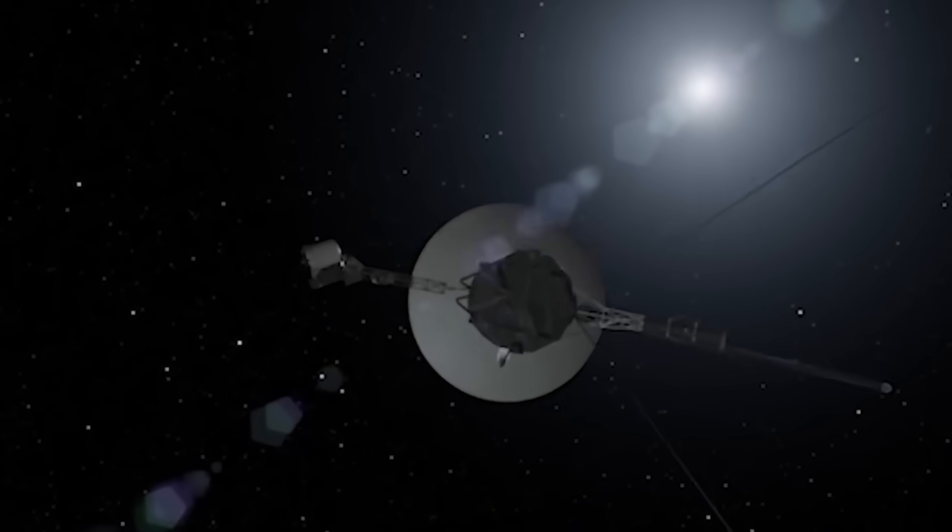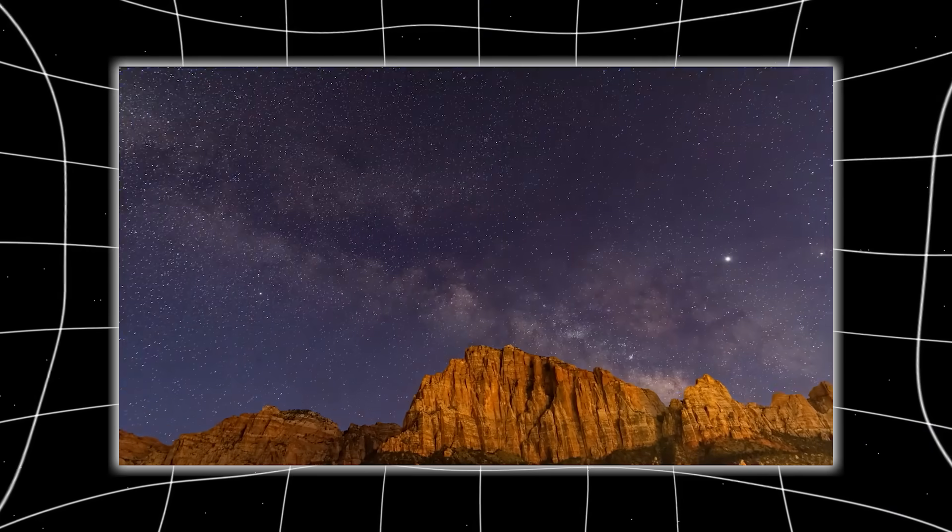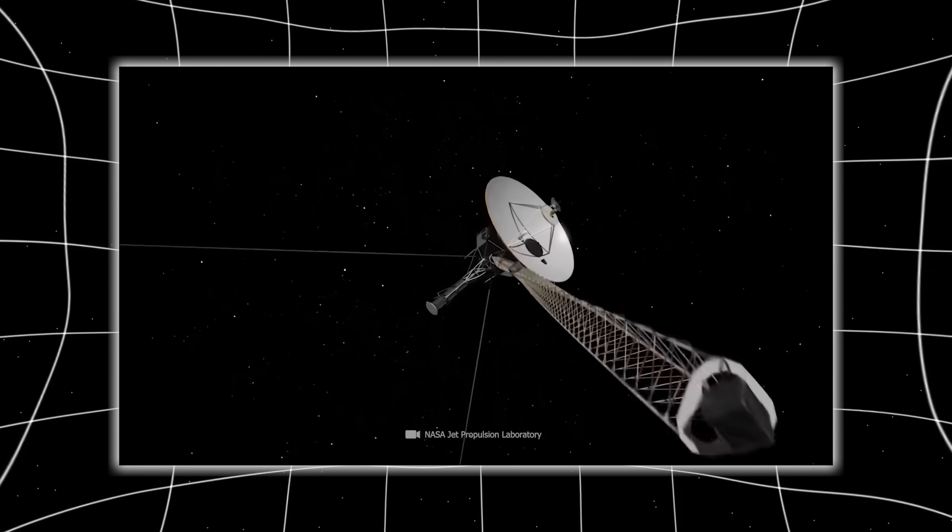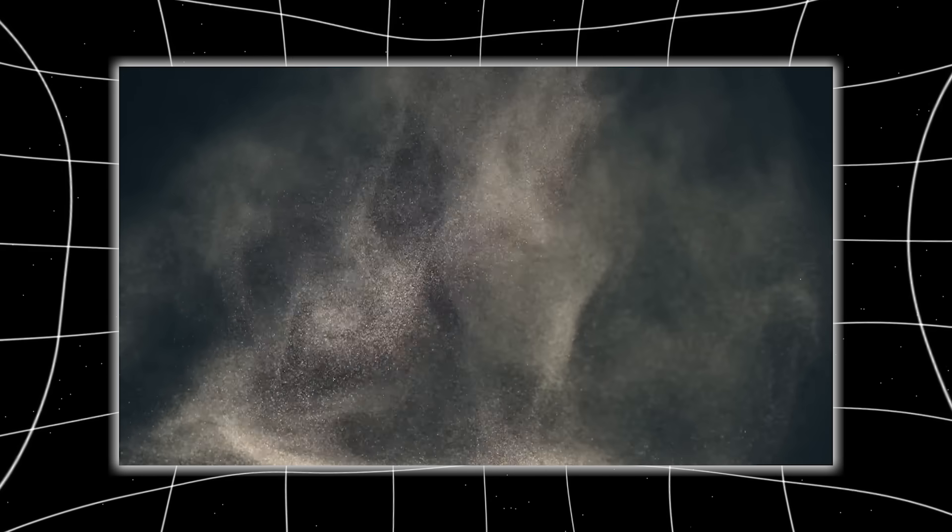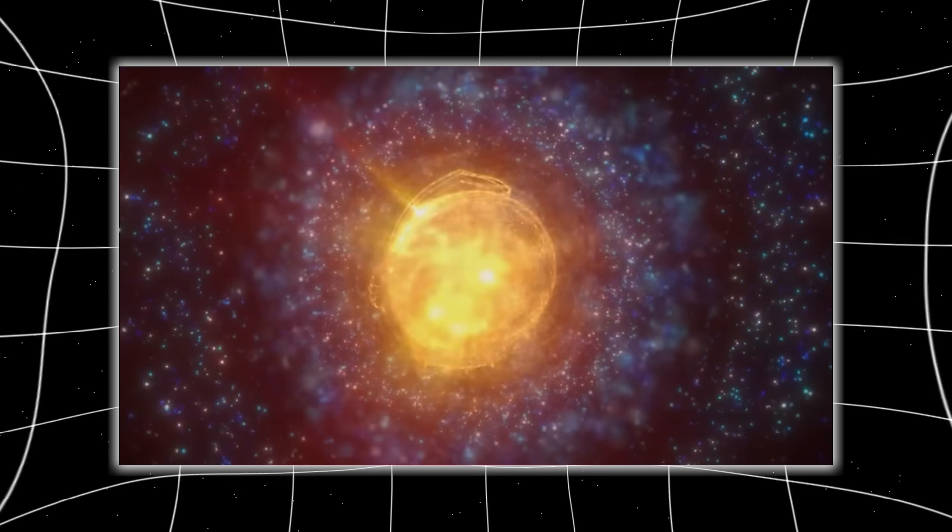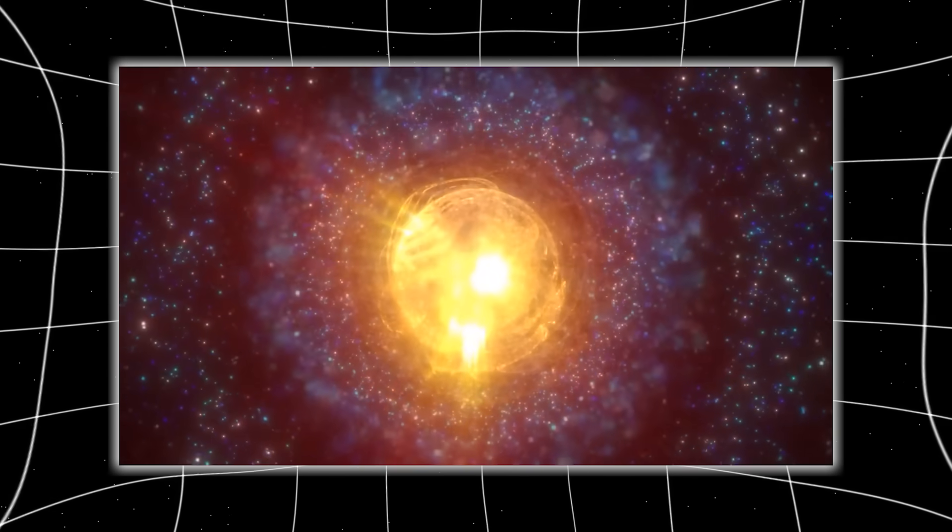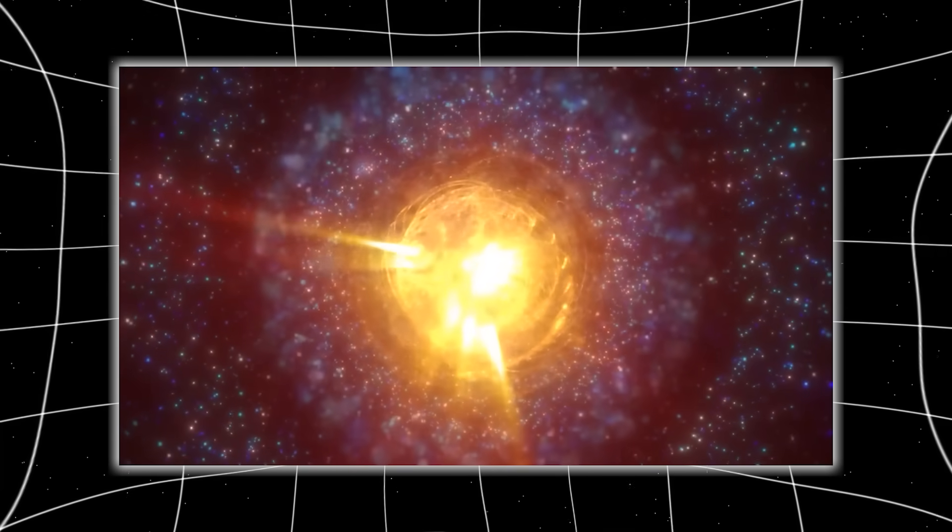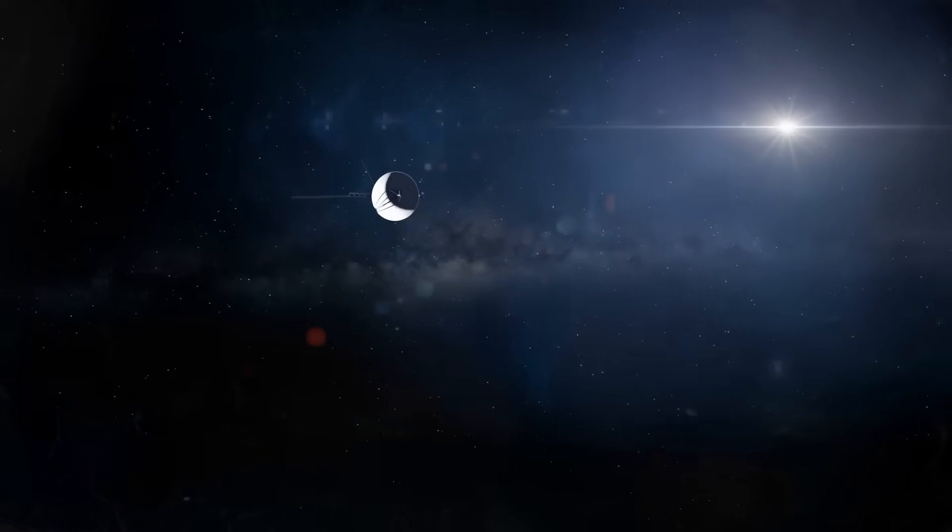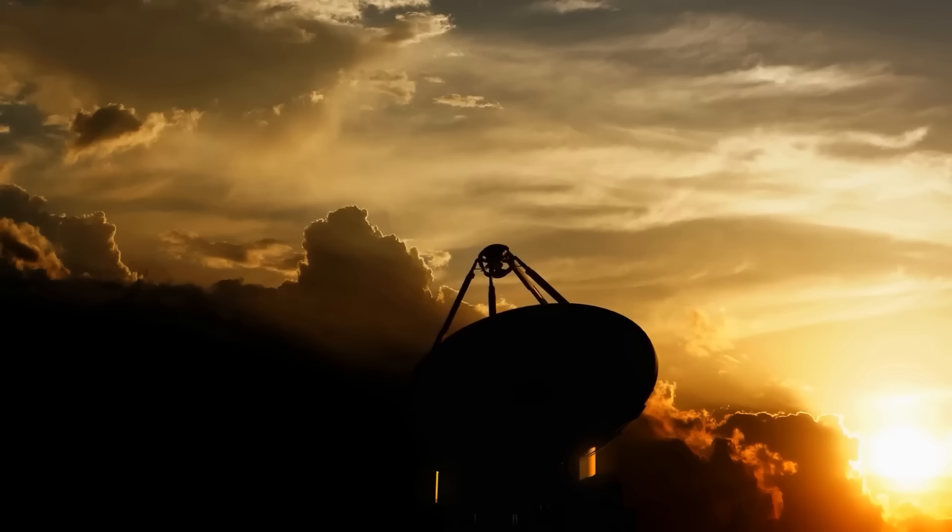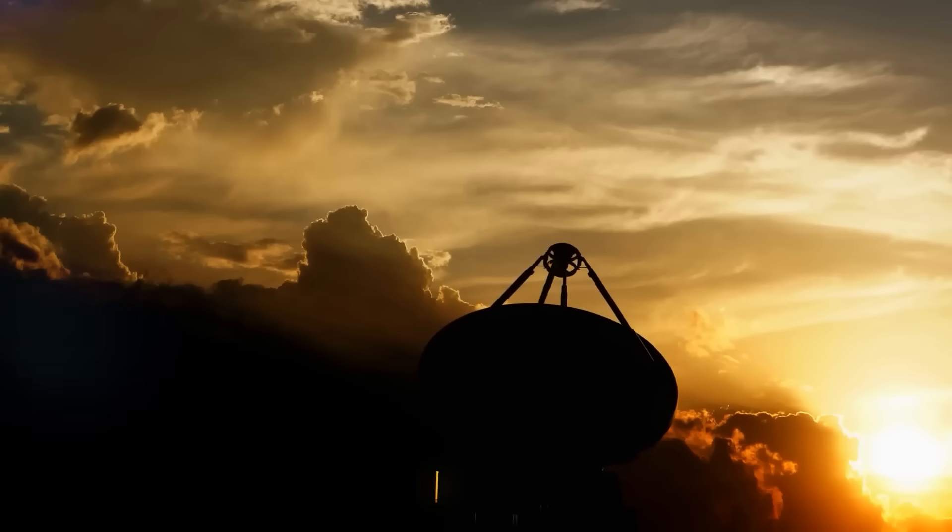And then, temperature spikes. Every 4.8 hours, Voyager's external systems would heat up by nearly 30 degrees, then cool back down. Like clockwork. Like breathing. The energy wasn't coming from inside. Something external was touching the probe. Worse still, despite the stress, Voyager's systems began to operate more efficiently. This wasn't degeneration. This was optimization.